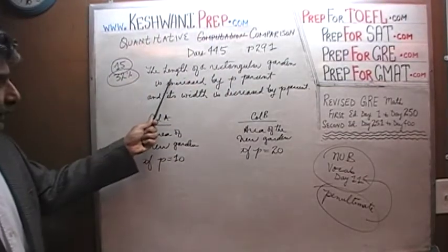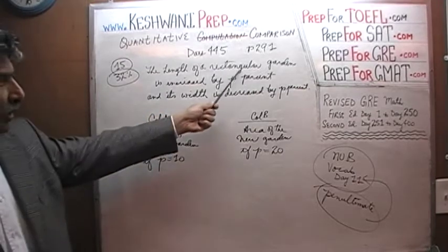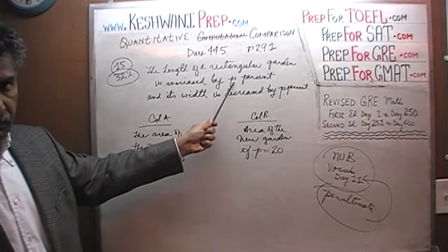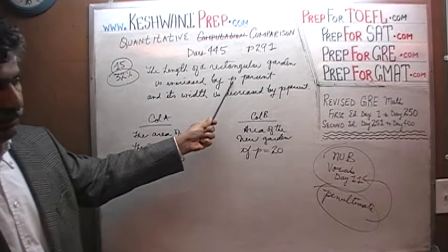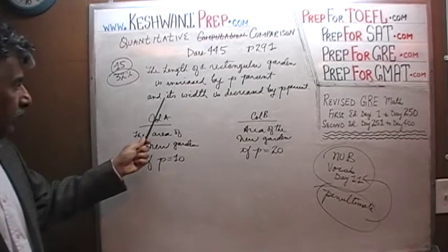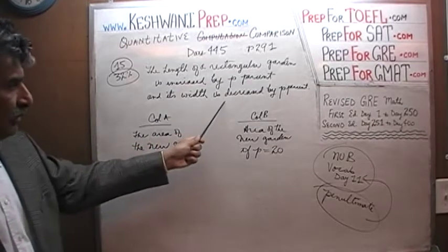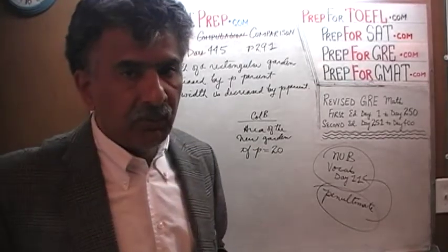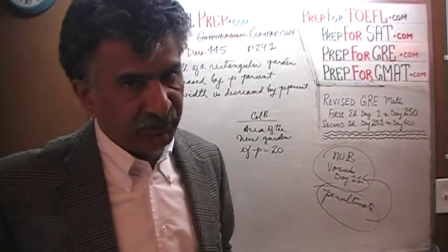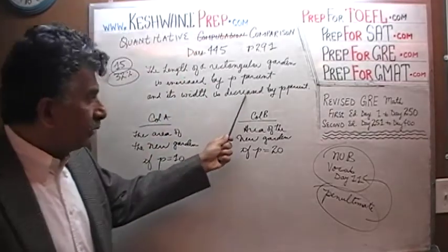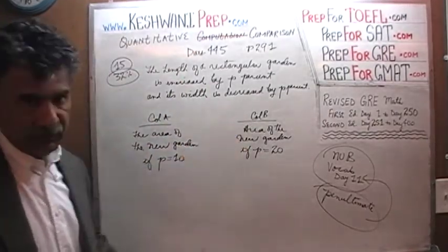Here's where the problem goes. We are told that the length of a rectangular garden is increased by p percent. So we have a rectangular garden, we are going to increase the length of that garden by p percent. We are further told that its width is decreased by p percent. So we are going to increase the length by a certain percentage and decrease its width by exactly the same percentage.